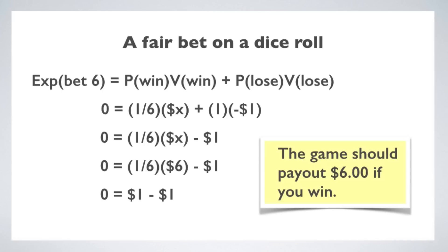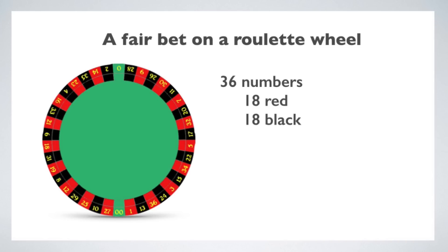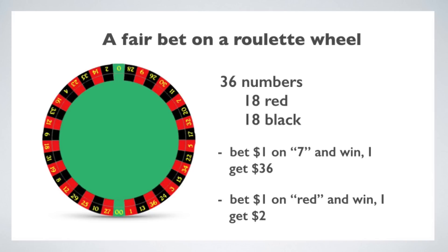These two examples illustrate a general principle: in a fair bet, the payout should be inversely proportional to the probability of winning. If I pay $1 to play a lottery with 100 tickets, so the chance of winning is 1 in 100, the payout for winning should be $100. Now we're in a position to talk about betting in a real casino. One of the classic games is roulette. You set a ball spinning in one direction and the roulette wheel spinning in the opposite direction, and you bet on which slot the ball will land in. The numbers 1 through 36 have alternating red and black slots — 18 red and 18 black. The casino pays out $36 if you win a bet on a specific number, and $2 if you bet on a color. So all of this seems consistent with a fair betting system.